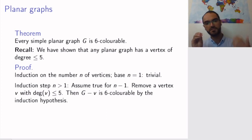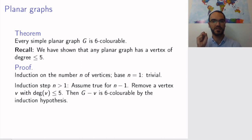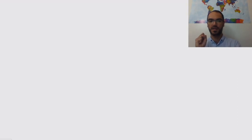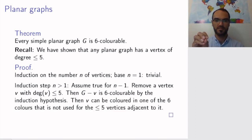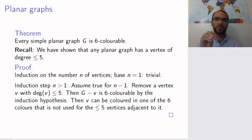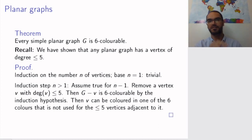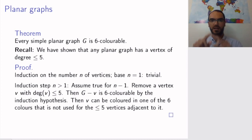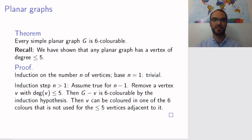We have our vertex with degree at most five, so we remove it. The remaining graph has n minus one vertices, is still simple and planar because we've just removed a vertex. By the induction hypothesis this remaining graph is six-colorable, and when we put back our vertex, by the same reasoning as before it has degree at most five, so it's adjacent to no more than five vertices. But we have six colors available, so even if all five vertices are colored differently there is a sixth color available. In other words, we can always find a color not used by the adjacent vertices to color v, and so every simple planar graph is six-colorable.